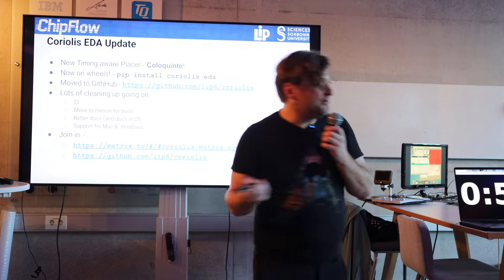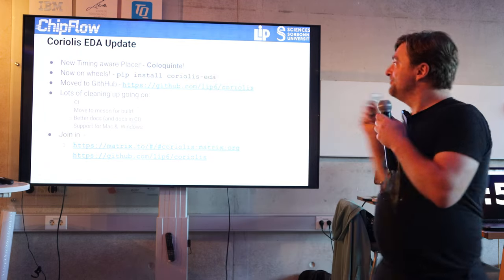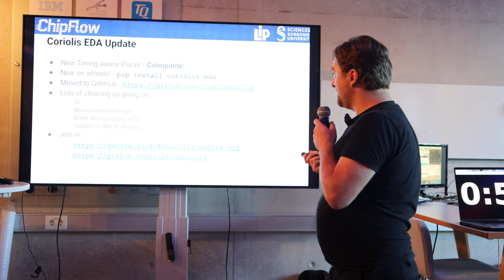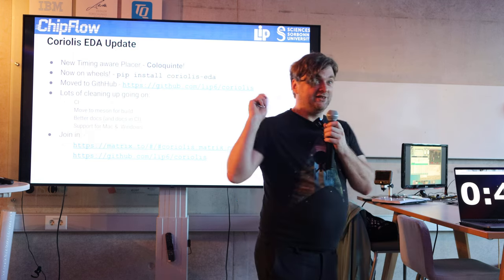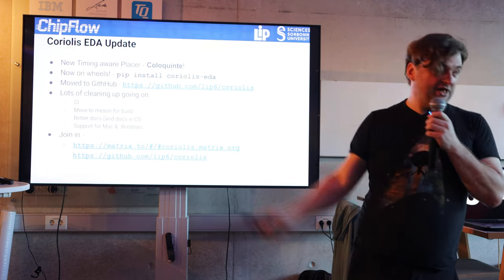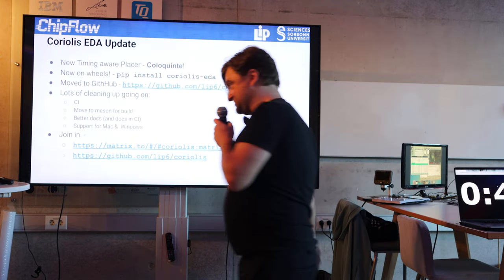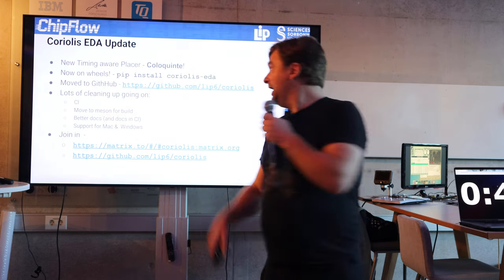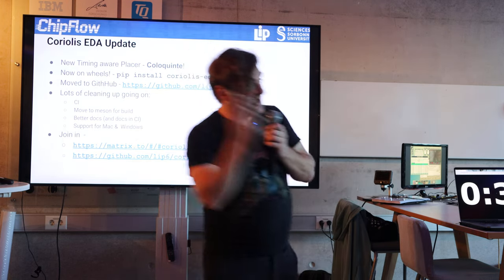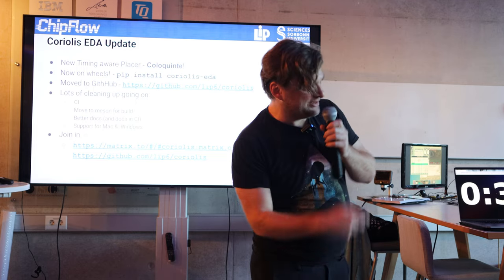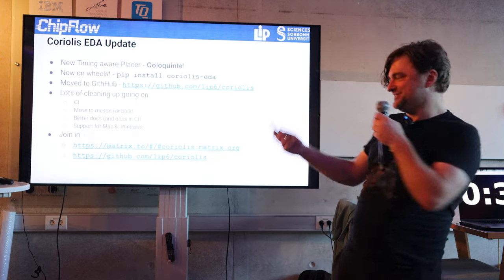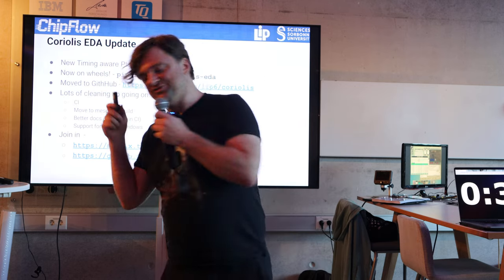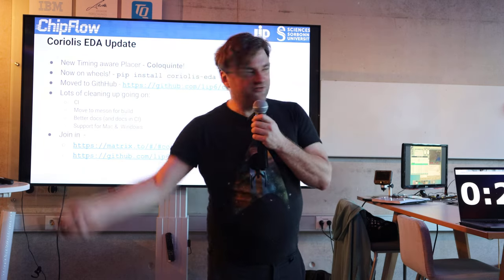There's a new timing-aware placer that's gone in called ColorQuinte — looking really good results with that. The big thing I've been working on is making this pip installable, because it used to be a nightmare to install. Now you can just pip install coriolis-eda. We've also moved to GitHub from a weird obscure GitLab instance which required a strange login — that's all gone now, and there are issues and stuff for getting started.